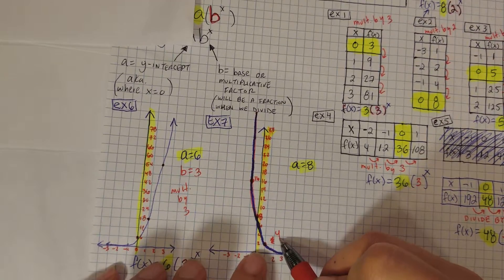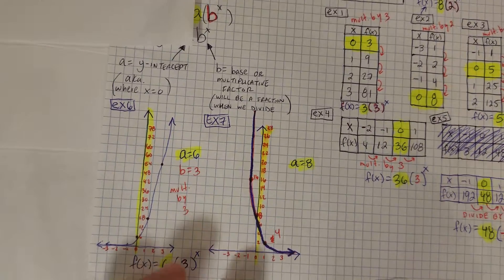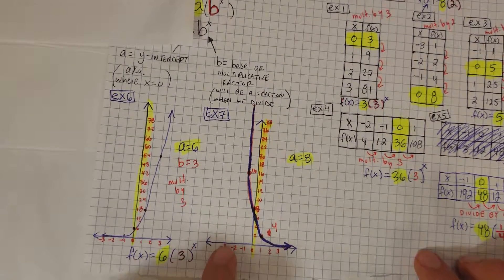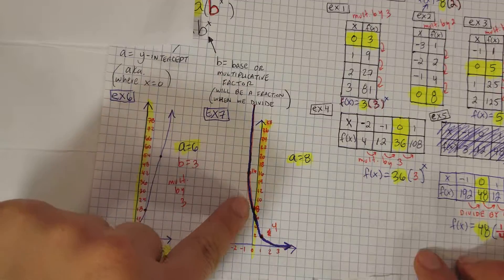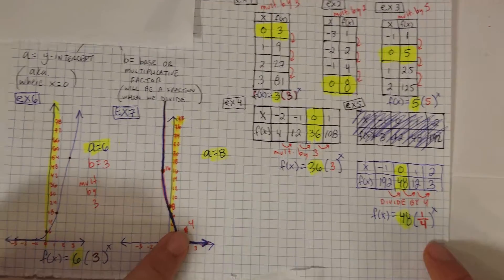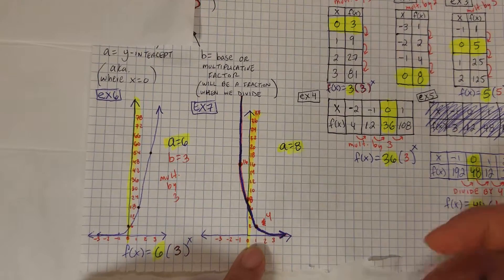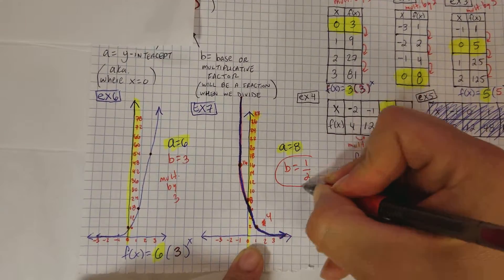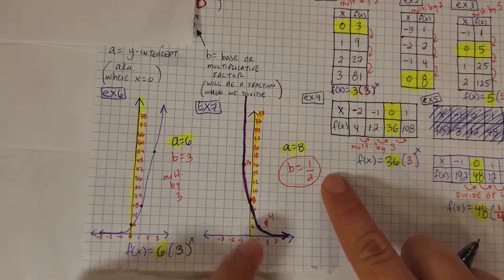4 turns into an 8, 8 turns into a 16 — so it seems like you're multiplying by 2. But you're supposed to read the graph from left to right, like a book, from lowest numbers to highest numbers. So this is actually not going to be getting bigger; it's going to be getting smaller. When it's getting smaller, it's going to be division — we're going to say it's divided by 2 rather than multiply by 2. So when we write b, we won't write 2; we would write 1 over 2 because we're actually dividing.